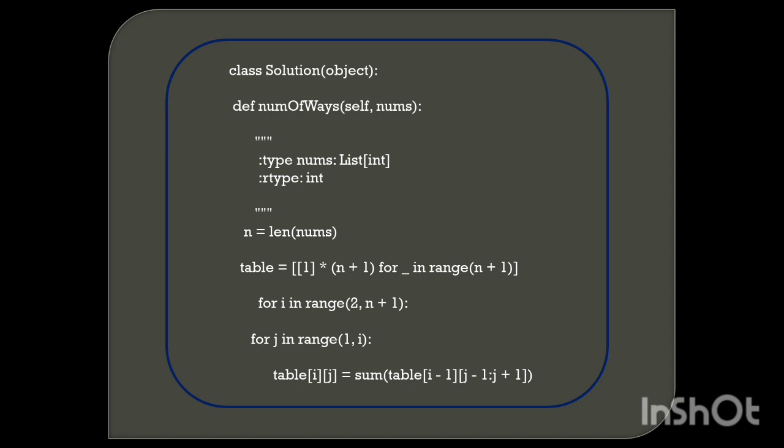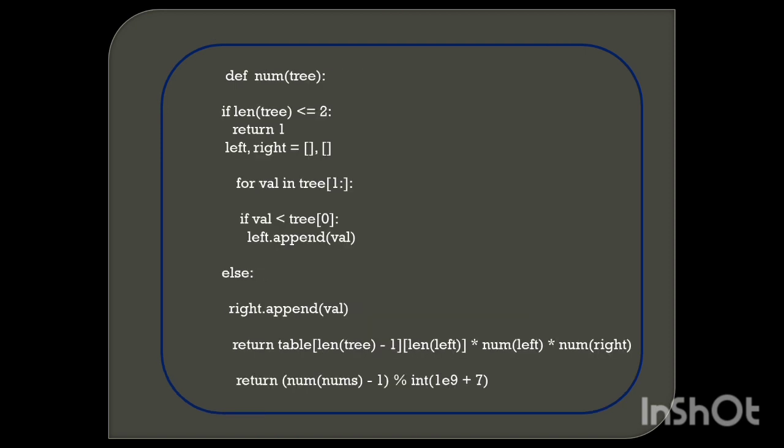In a binary tree we declare three variables: pointer for left child, pointer for right child, and data elements. We use an if-else condition and the table values. We write table[i][j] as the sum of table[i][j-1] with the second bracket as [j-1:j+1]. The loop structure uses for range(2, n+1) and range(1, i).